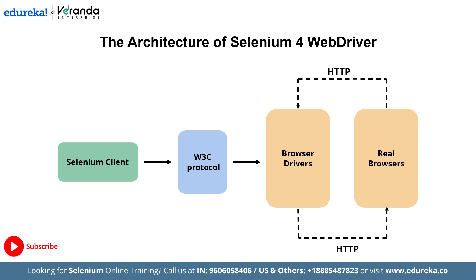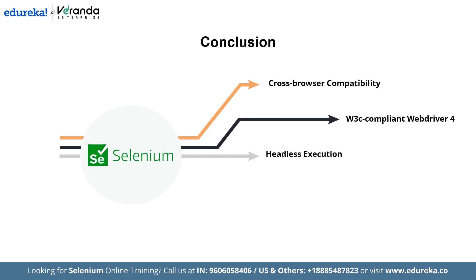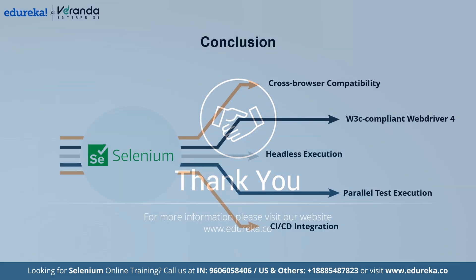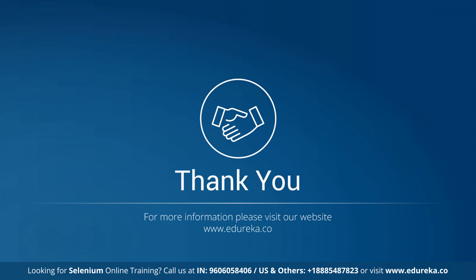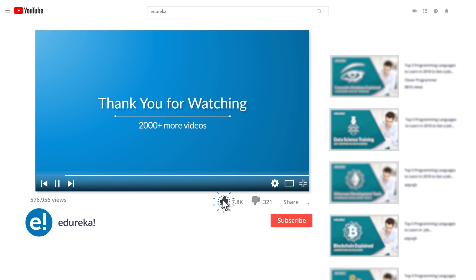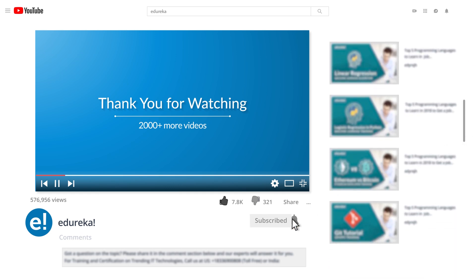Selenium is the secret weapon for effortless web automation. With cross-browser compatibility and W3C compliant WebDriver 4, it delivers faster, more stable and more efficient testing, making web automation smoother than ever. With this, we have come to an end to this video on what is Selenium. If you enjoyed this video, please like it and comment any doubts or queries — we will reply at the earliest. Do look up for more videos and subscribe to Edureka's YouTube channel to learn more.